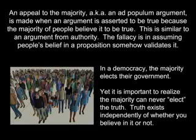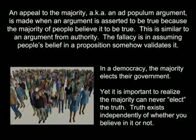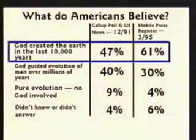Appeal to the Majority. An appeal to the majority, also known as an ad populum argument, is made when an argument is asserted to be true because the majority of people believe it to be true. This is similar to an argument from authority. The fallacy is in assuming people's belief in a proposition somehow validates it. In a democracy, the majority elects their government — yet it is important to realize the majority can never elect the truth. Truth exists independently of whether you believe in it or not. Most Americans think the earth is less than 10,000 years old and God made it.